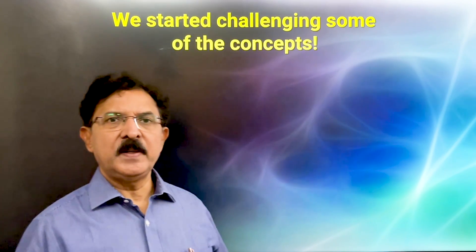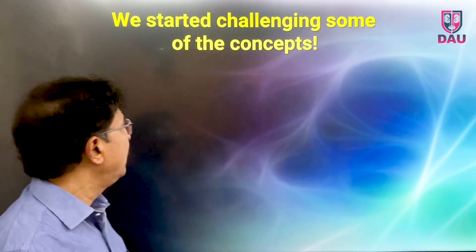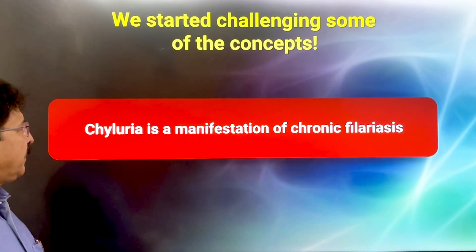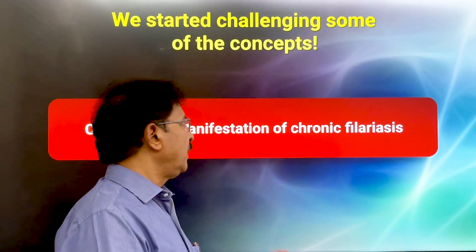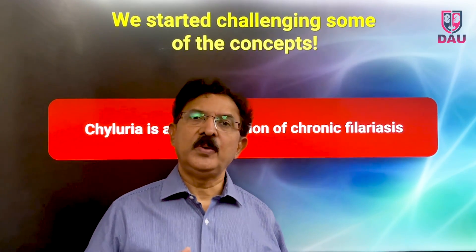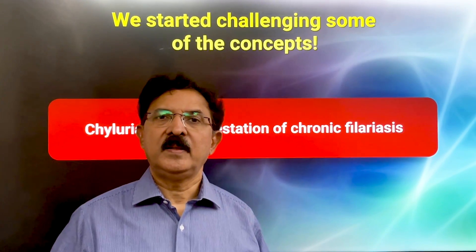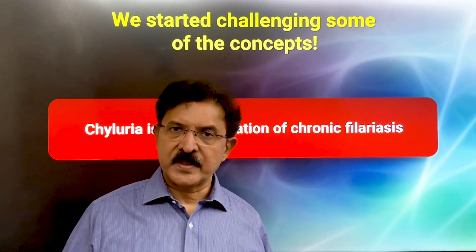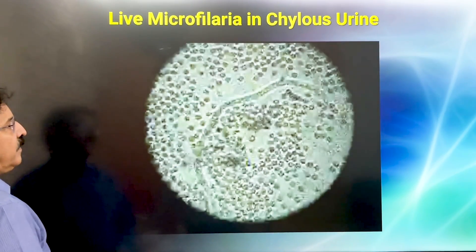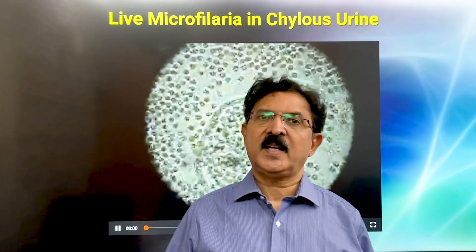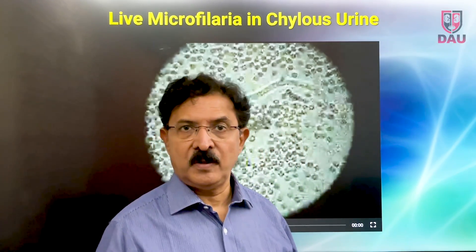When we started seeing these patients we began challenging some of the concepts. The common concept was that chyluria is a manifestation of chronic filariasis, and it was said that the patient must have had filariasis 7 to 10 years earlier than the onset of chyluria — so it takes that much time for chyluria to manifest. But then we saw in our patients' urine a moving live microfilarial worm. Why should a patient of chyluria have a live microfilaria coming in the urine if it is a manifestation of chronic filariasis?